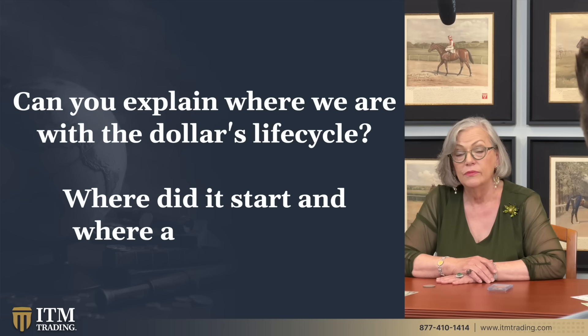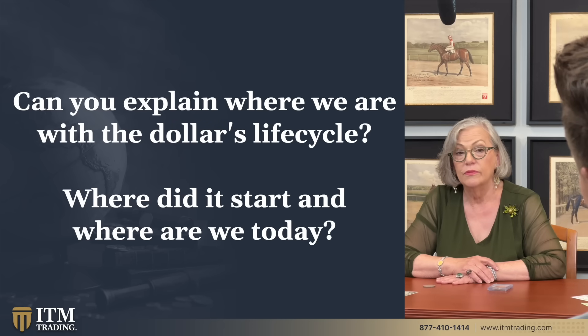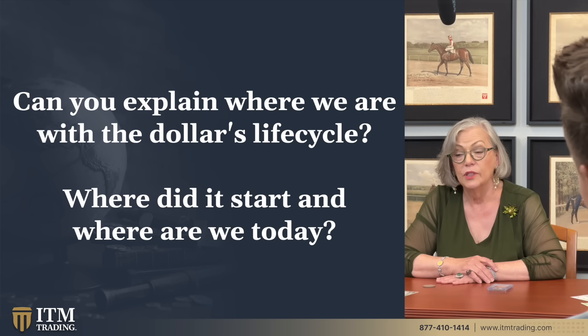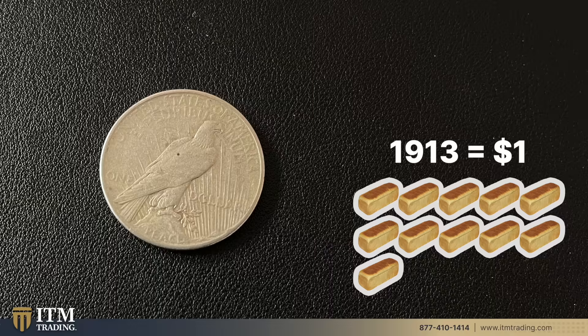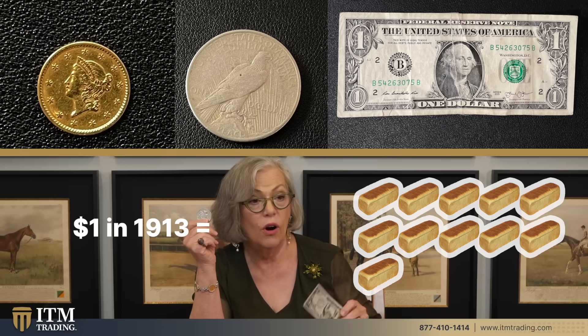Can you explain where we are with the dollar and its life cycle, where it started and where we are today? Well, we started in 1913. At that point, it had a dollar's worth of purchasing power. For example, a dollar bill could either be a twentieth of an ounce of gold coin — about half the size of my pinky fingernail — or this one-ounce silver coin, or a dollar bill.